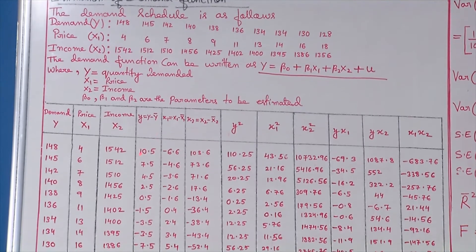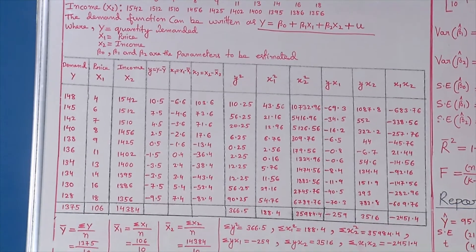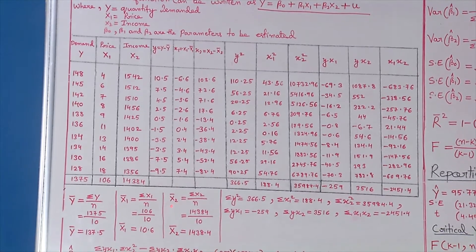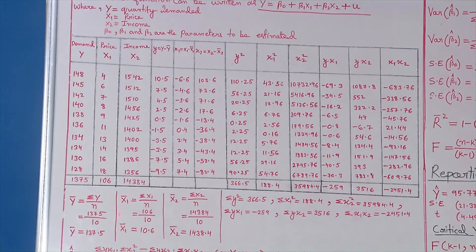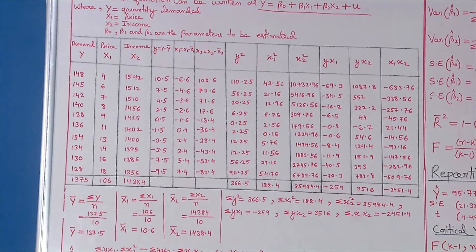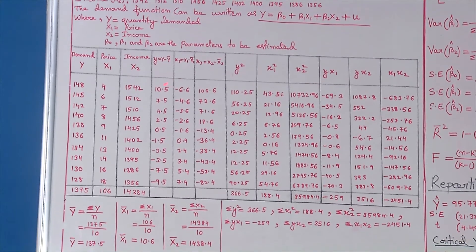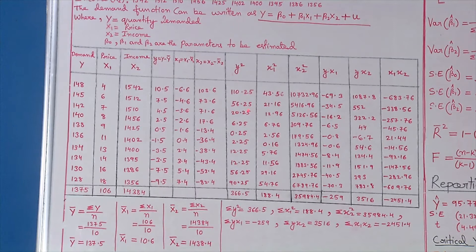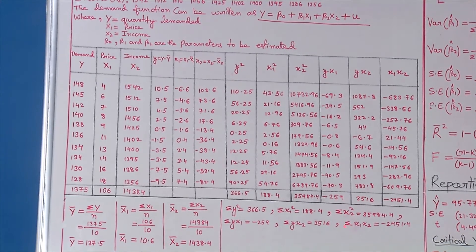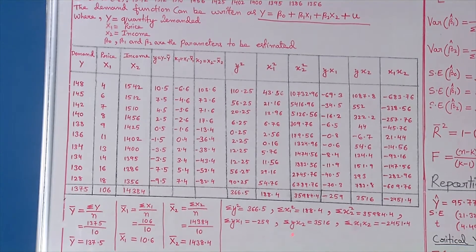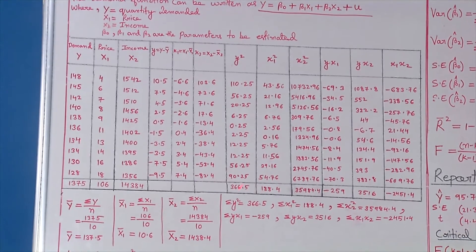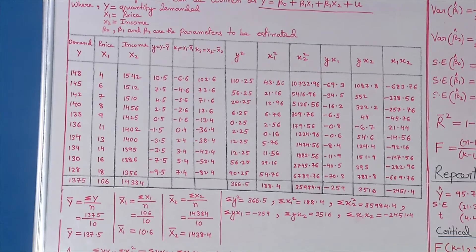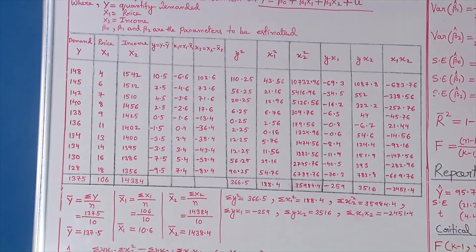From these values we can get the average value of y, the average value of x₁, and the average value of x₂ using the usual formula of taking averages. From the average values, we can take the deviated values for quantity demanded, price, and income — that is y, x₁, and x₂. After getting the deviated values, we may get the squared values: σy², σx₁², σx₂², and also σyx₁, σyx₂, and σx₁x₂. From these values, we may calculate the regression coefficients β̂₁, β̂₂, and β̂₀.